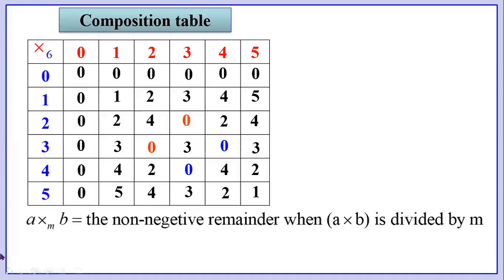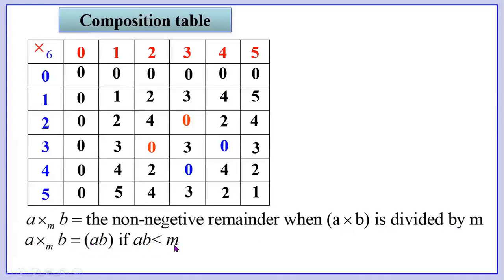Remember that A modulo B is the non-negative remainder when A times B is divided by M. A modulo B equals A times B if the product is less than M — we write it as is. For example, 2 into 2 is 4, which is less than 6, so we wrote 4 as it is. Whenever the product is less than M, we write the product.